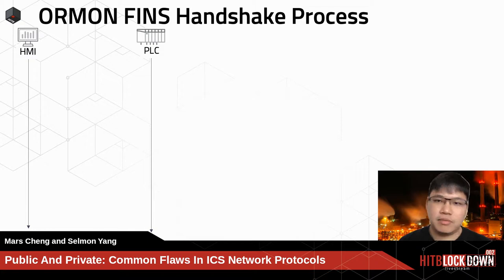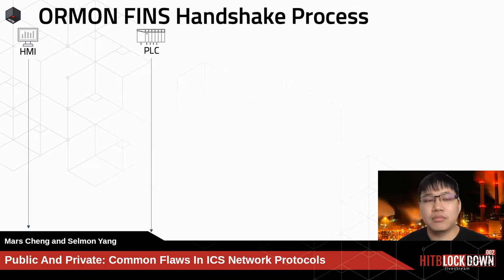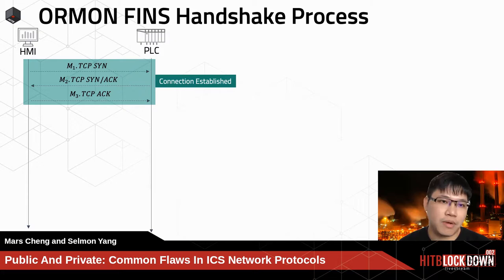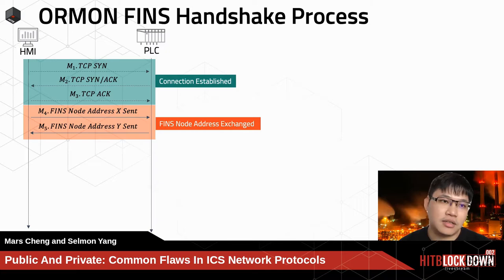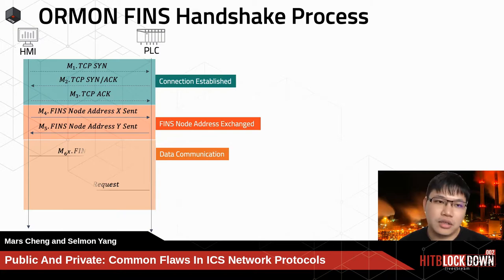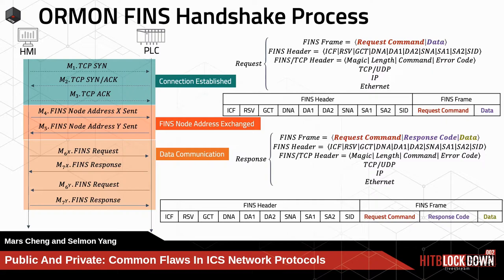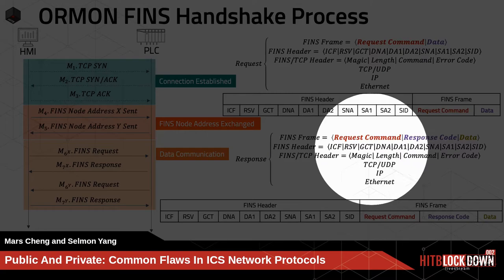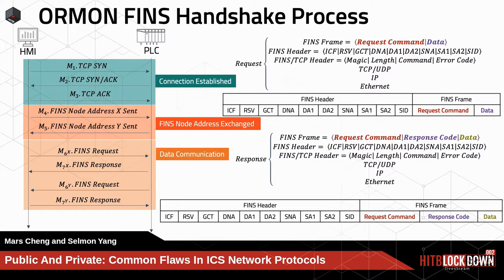For private protocols, let's talk about Mitsubishi FINS, Omron, and Siemens S7. The FINS protocol first exchanges addresses at the beginning of communication, conducting formal communication similar to Modbus. The transmission handshakes, but Modbus does not. After the FINS node address exchange, the real FINS request and response occur. Similar to Modbus, you just need to know the request command and data — you can control and take over the Omron FINS protocol. It has no encryption or security; all traffic including passwords, addresses, and feedback is plain text. There is no authentication or authorization.